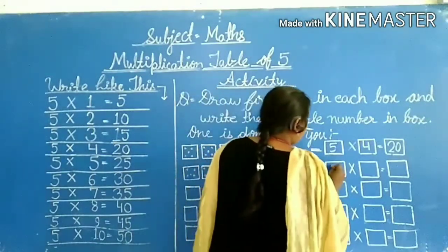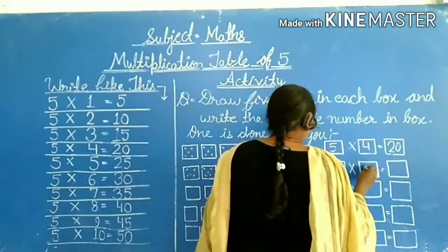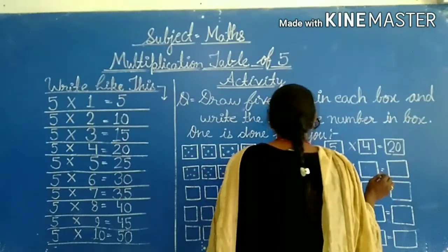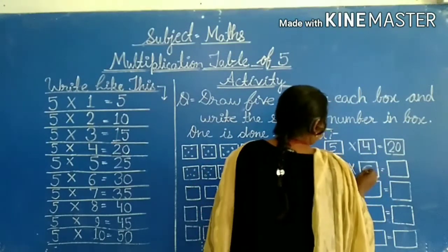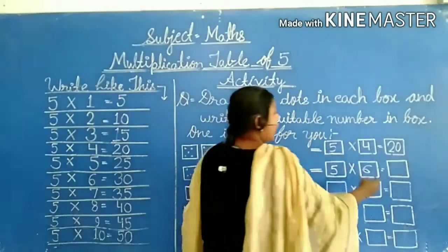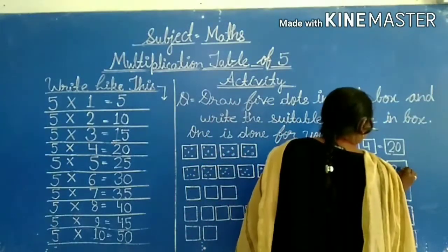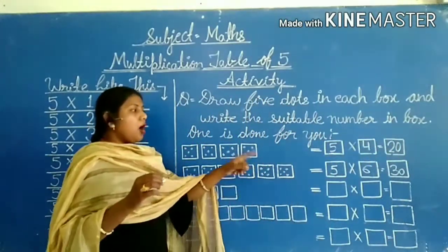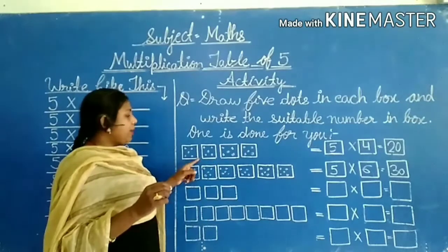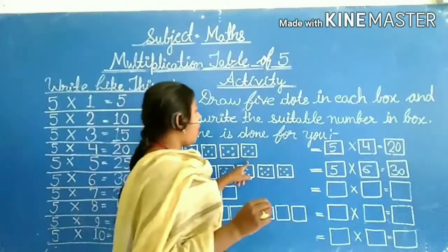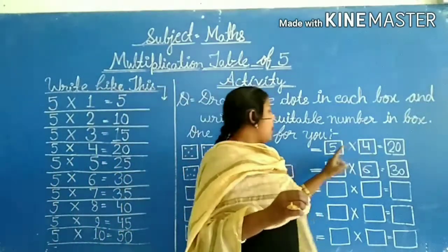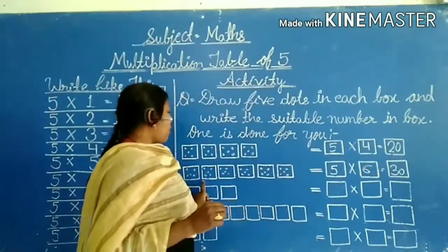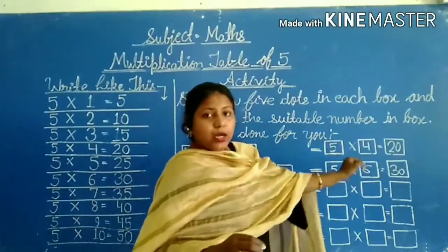Here we will have 5 dots, here we will have 6 dots. So 6 dots. We will count here. 1, 2, 3, 4 dots. Here we have 5 dots, so we have 6 dots. Here we have 5 dots.